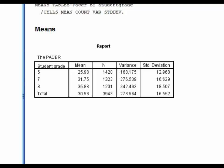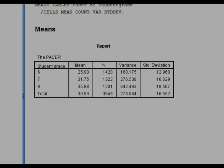If you square the standard deviation, you'll get the variance. So you'll notice the variance is smallest for grade six and largest for grade eight. This simply indicates how much variability there is in Pacer laps, in this case, dependent upon what your grade level is.